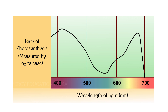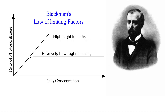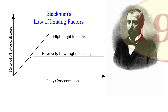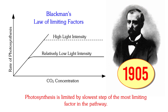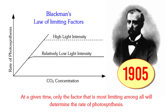Photosynthesis is not affected by all environmental factors at a given time. According to Blackman, who postulated the law of limiting factor in 1905, photosynthesis is limited by the slowest step of the most limiting factor in the pathway. This means that at a given time only the factor that is most limiting among all will determine the rate of photosynthesis.